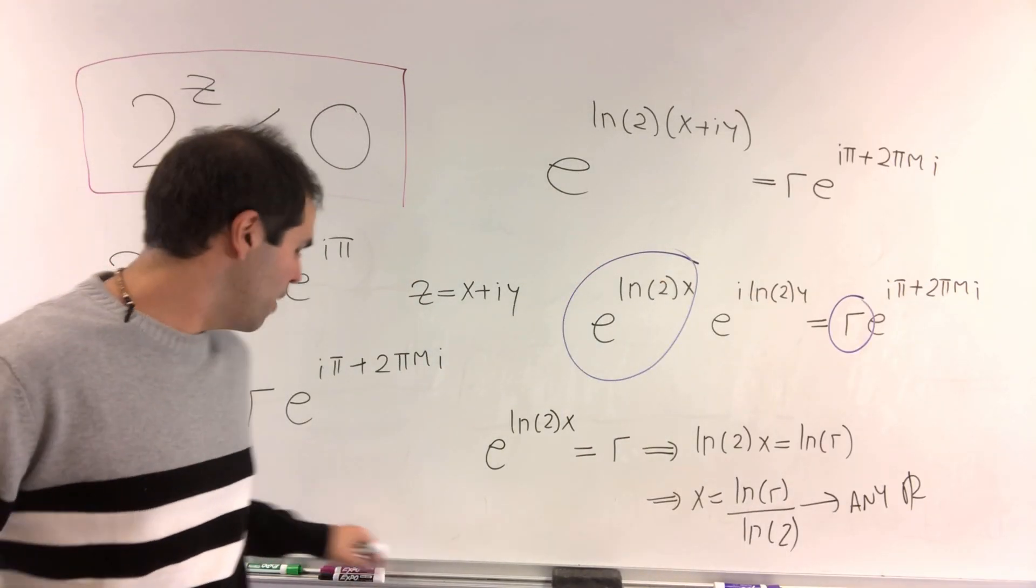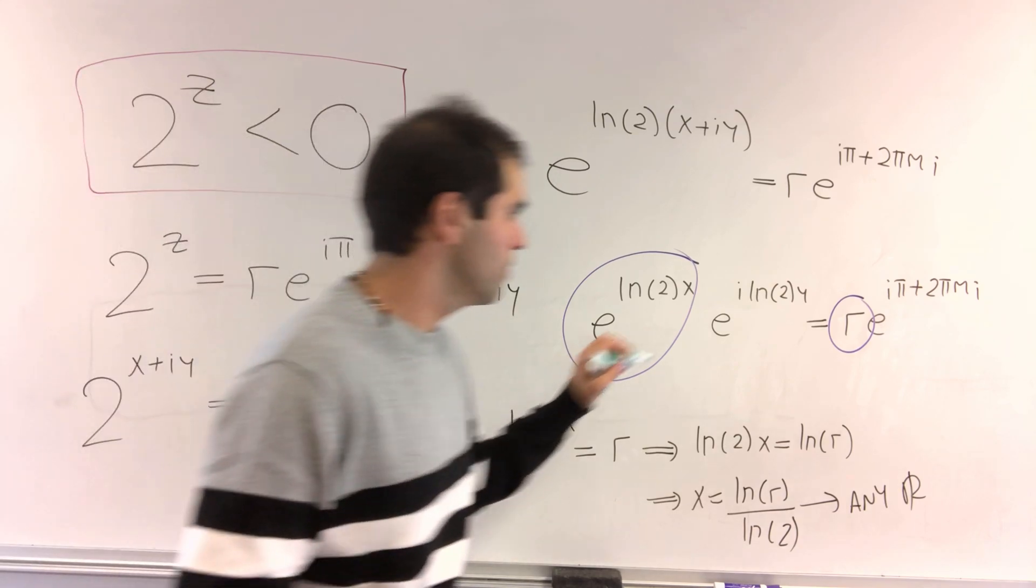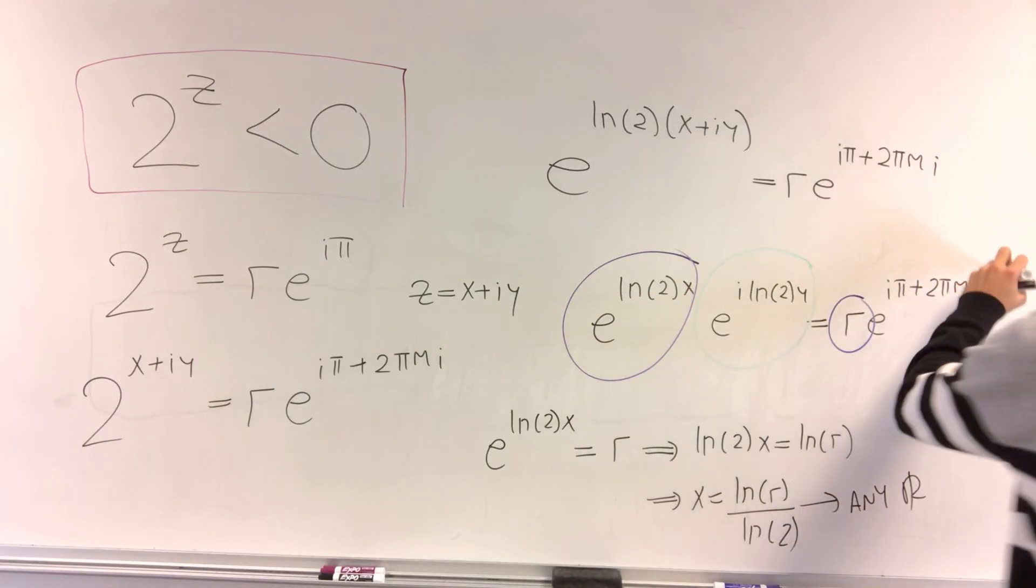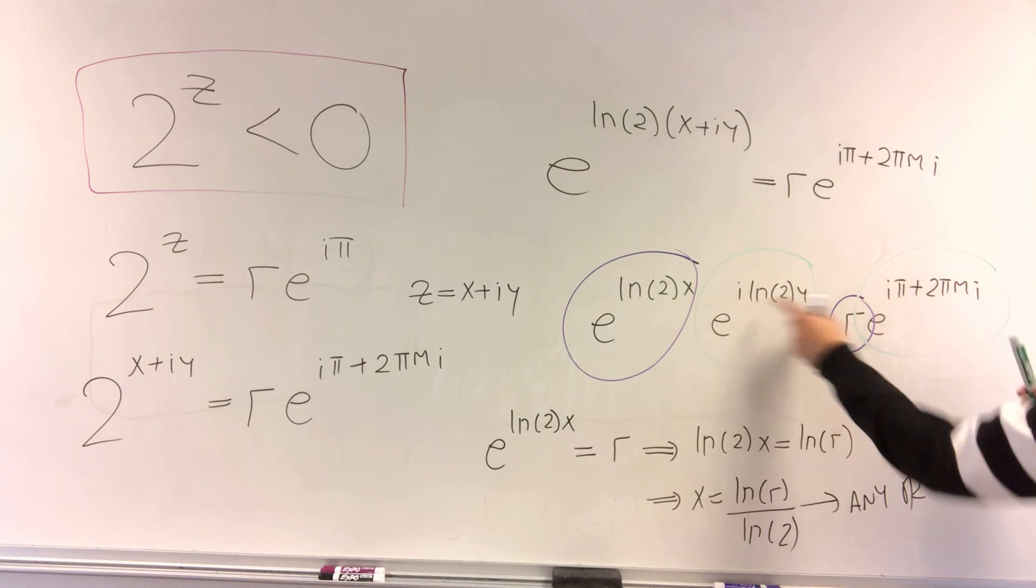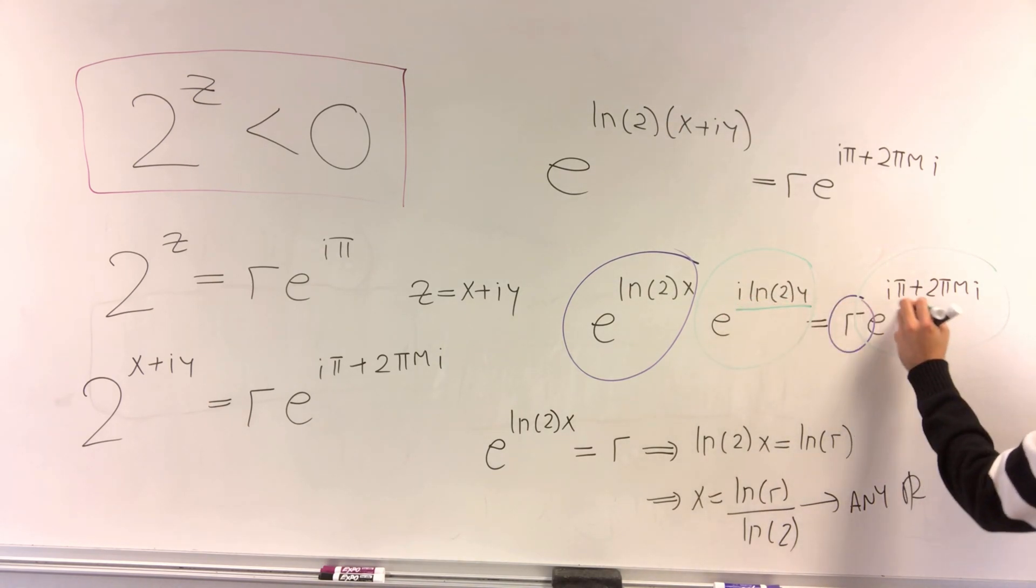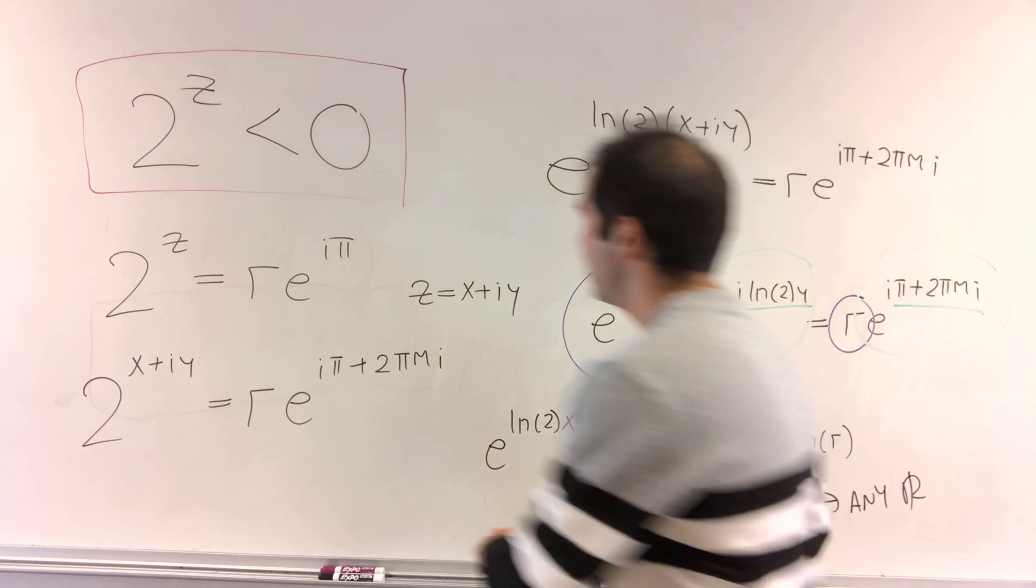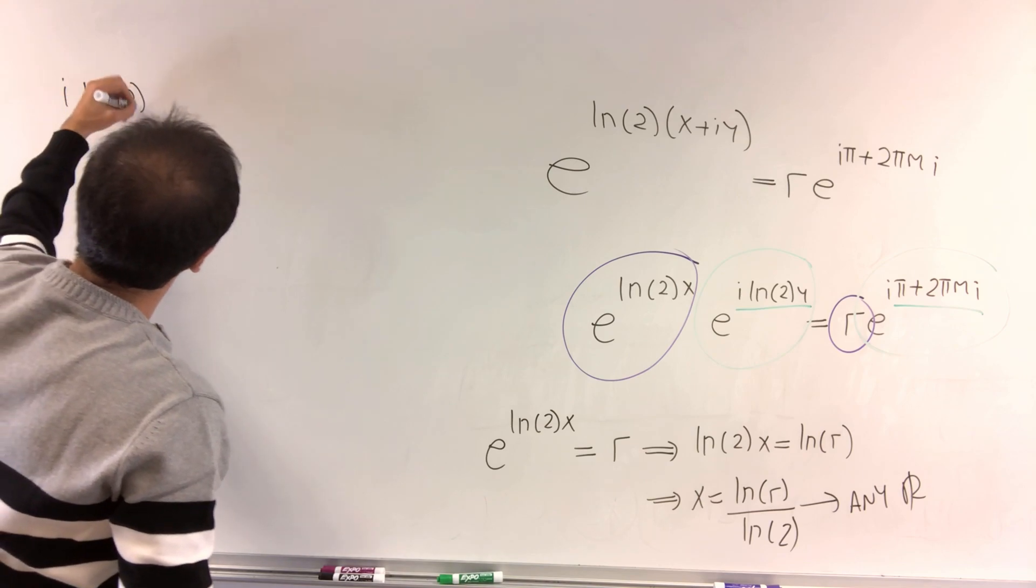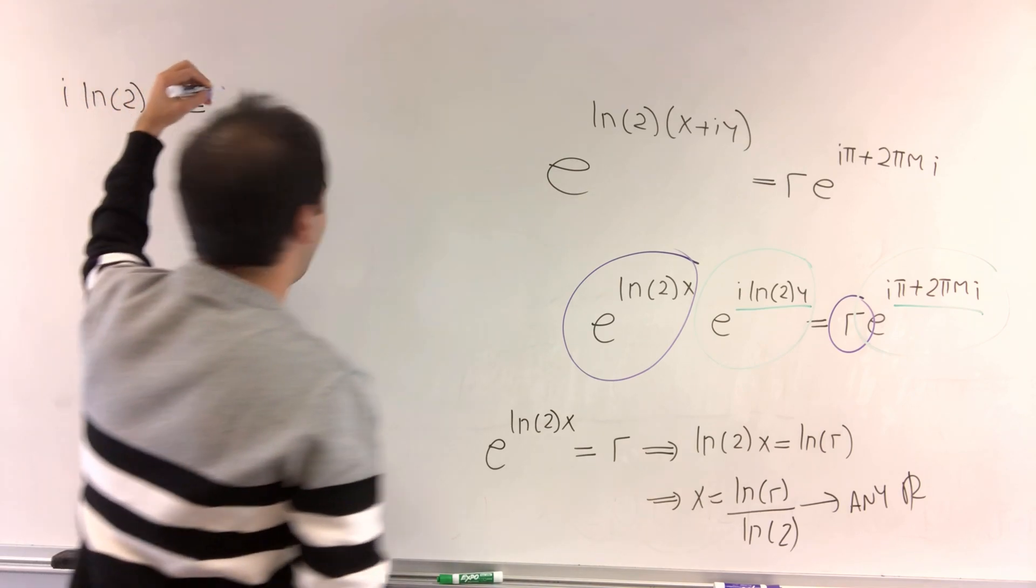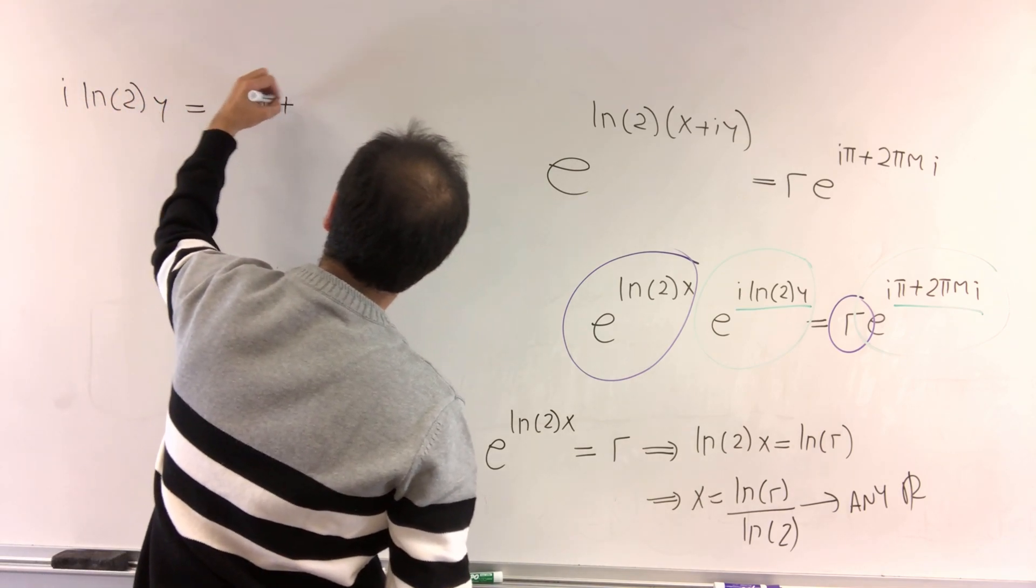let's figure out what happens to the imaginary part. To the imaginary complex exponentials, well, here the cool thing is you can just compare the exponents. And then what you get is the following. Then you get i ln of 2 y equals i pi plus 2 pi m i.